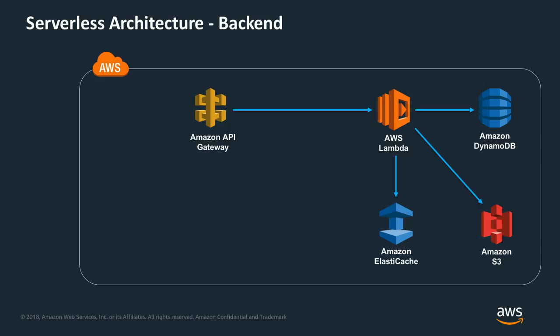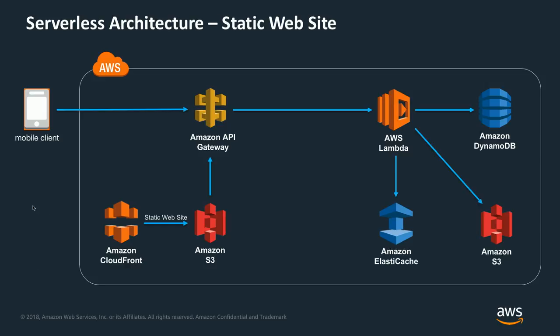So instead of hitting the database over and over, you're actually going to cache this data for a certain time and return it back to the call coming from Amazon API Gateway to make performance better and save costs. One client of this architecture could be your mobile client, where you can build a mobile application to call and consume your backend by calling the Amazon API Gateway APIs. The second client could be a static website hosted in Amazon S3 and distributed using Amazon CloudFront.